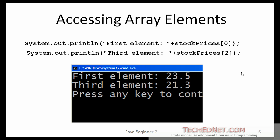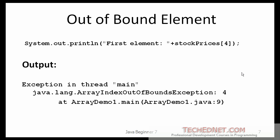If you ever use an index outside of the valid range — which is 0 to size minus 1 — your program will crash. In Java's terminology, it will throw an exception. This is what you would see if you try to access the stock prices with an index of 4. The array has a size of 4, so the valid indexes are 0 through 3. You will not have a problem at compile time, but when you run the program it will crash and say exception in thread main, with an ArrayIndexOutOfBoundsException, and it will tell you the line number where the exception occurred — in this program that was line number 9.